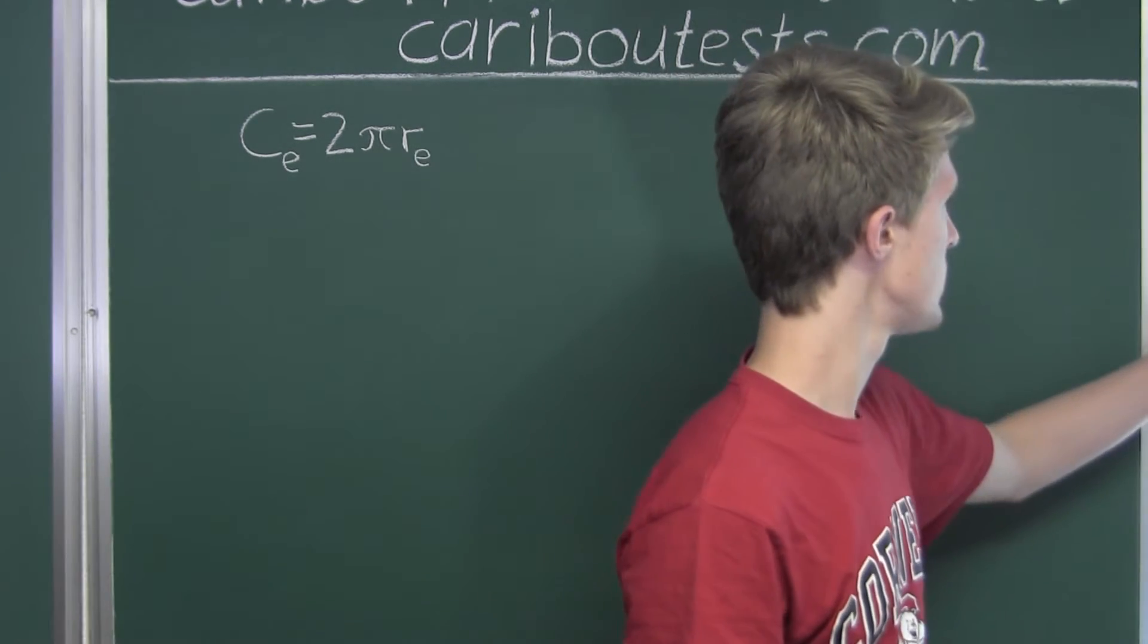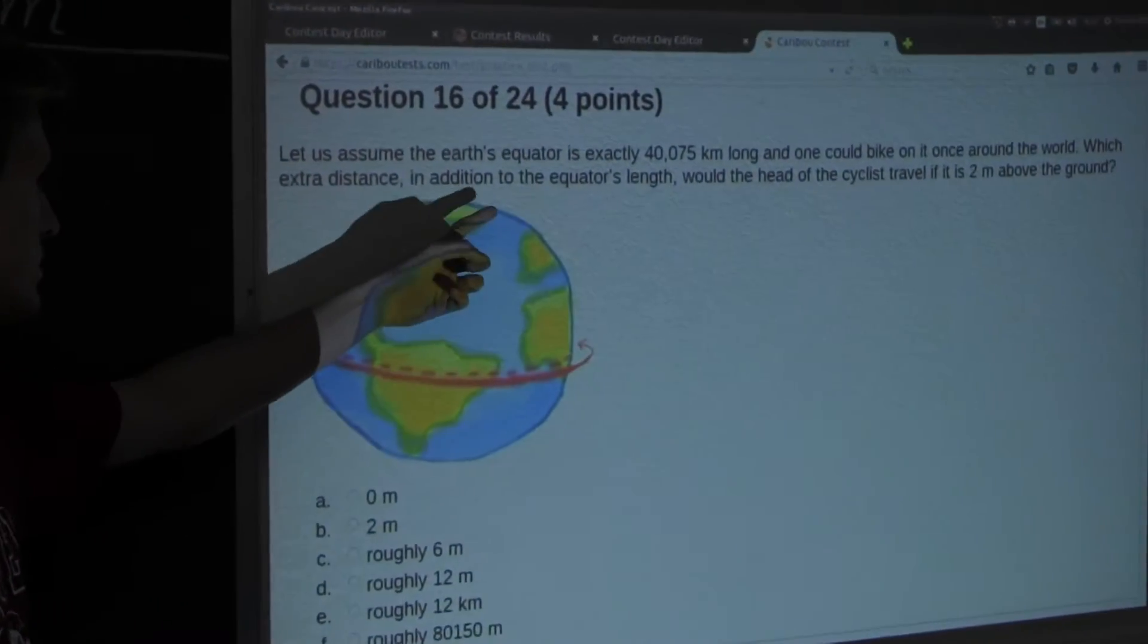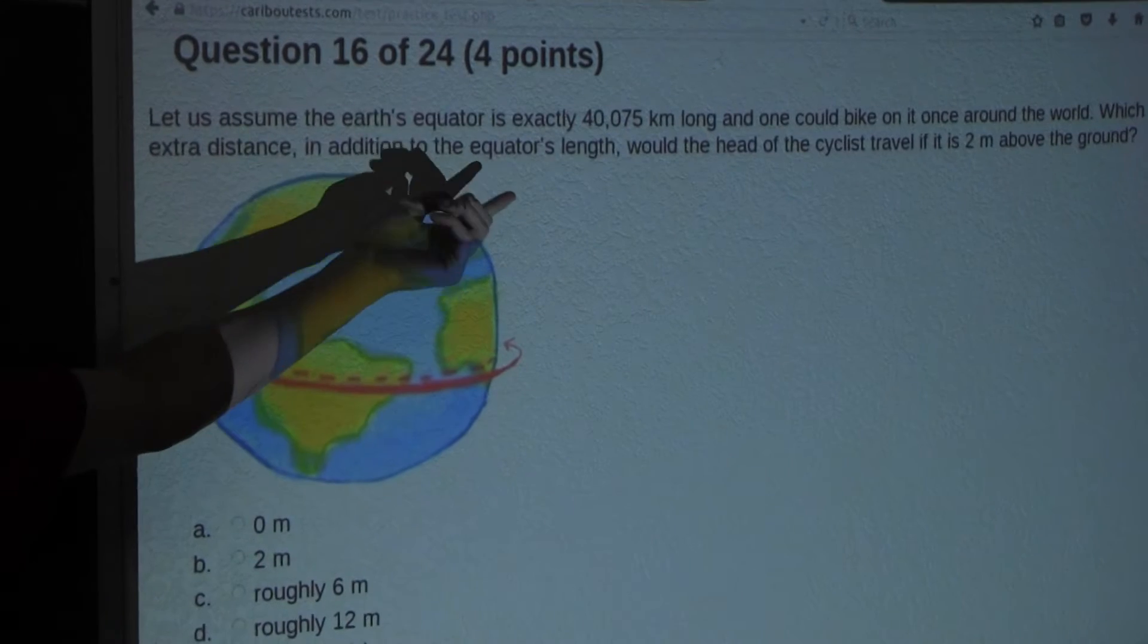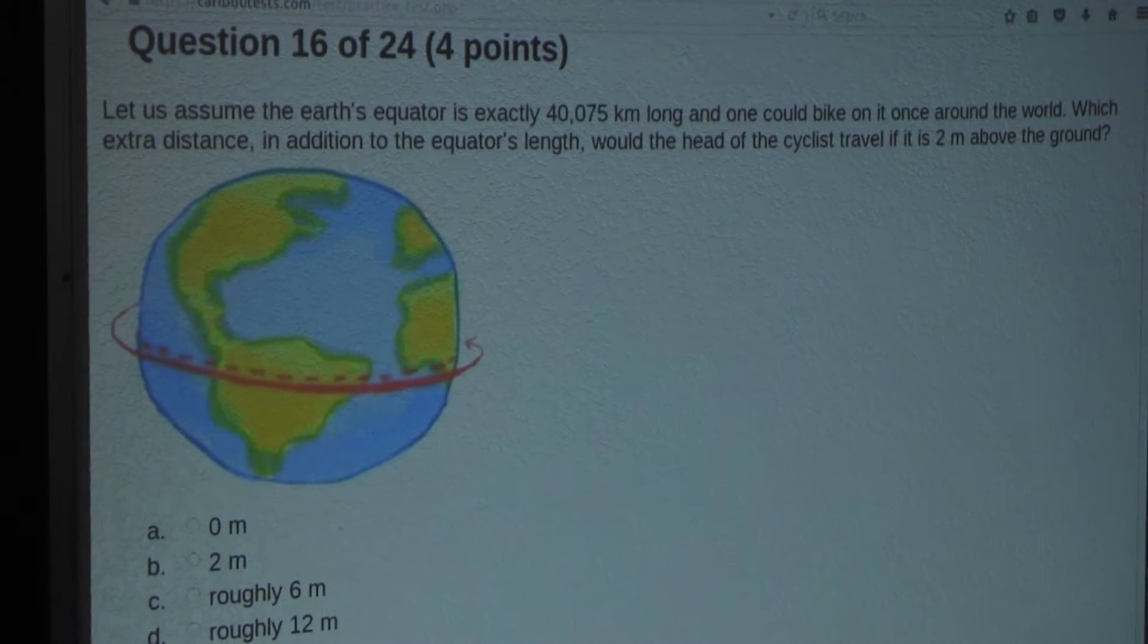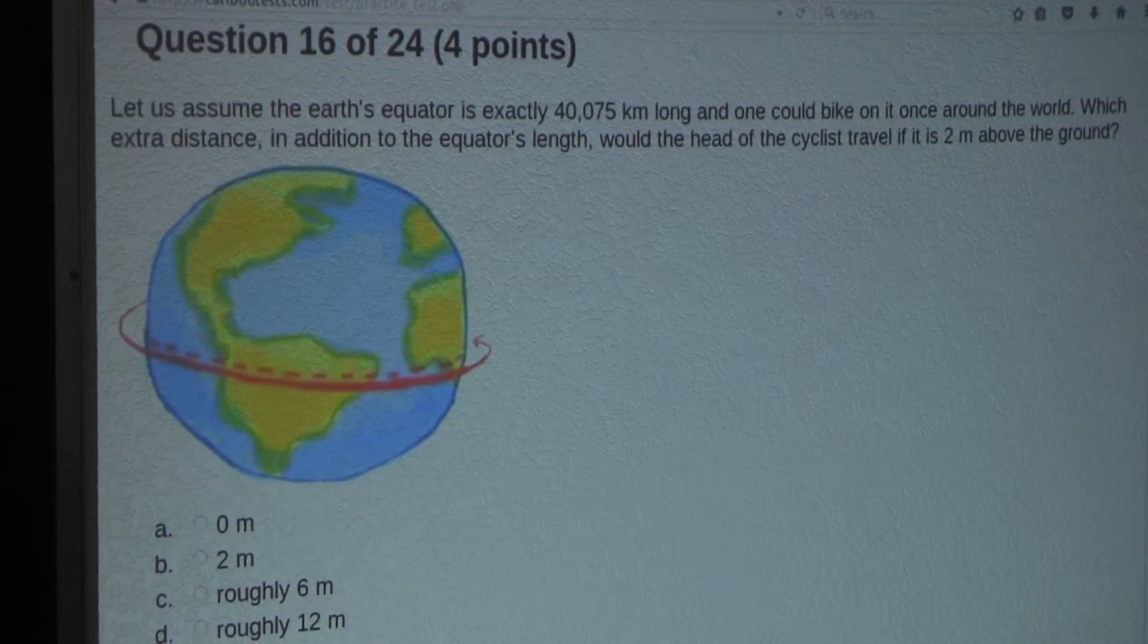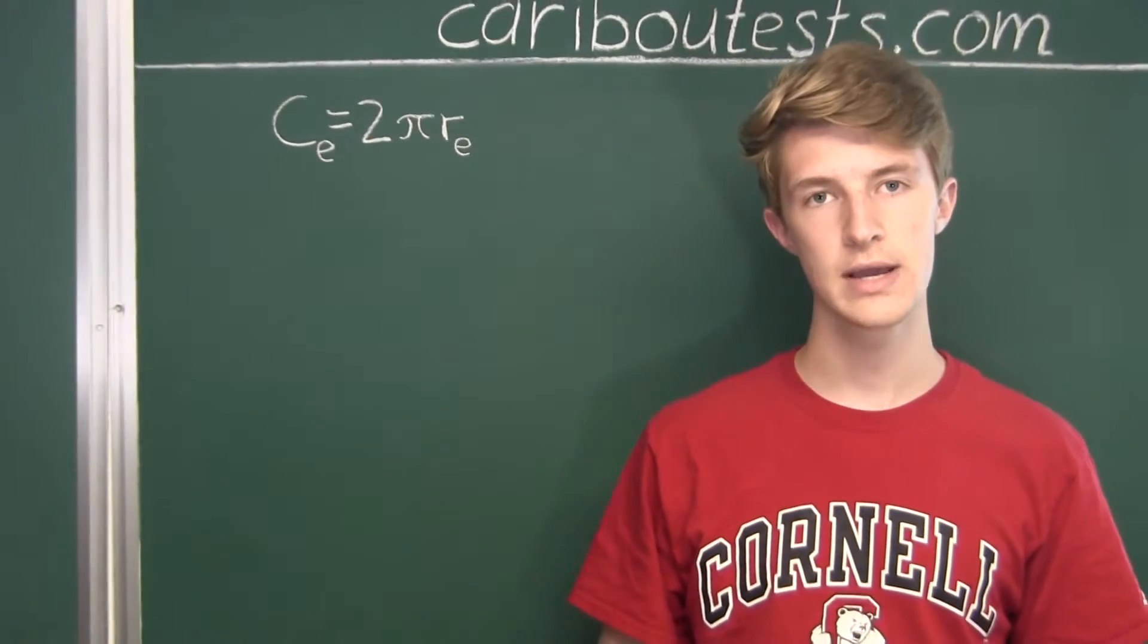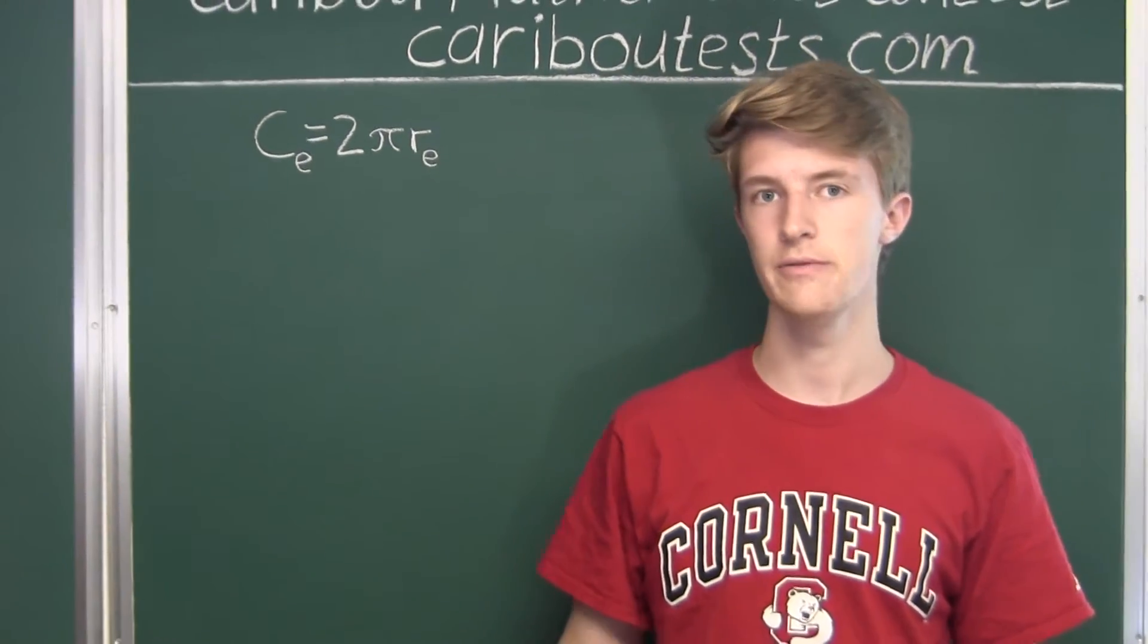From the question, it asks which extra distance would the head of the cyclist travel if it is 2 meters above the ground. Well, the head of the cyclist also follows a circular path around the earth, so we want to find the circumference of that circle.